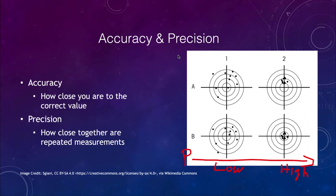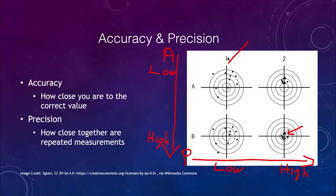Accuracy increases as you move downward. Those at the top have low accuracy — they are nowhere near the central portions of the target — while those at the bottom have higher accuracy. You can have high accuracy and high precision, giving a tightly grouped cluster right around the center. You can also get combinations: high accuracy but low precision where things are scattered but still centered, or low accuracy and high precision where you get a tight cluster that's not around the center — which may indicate something about your measurement device.